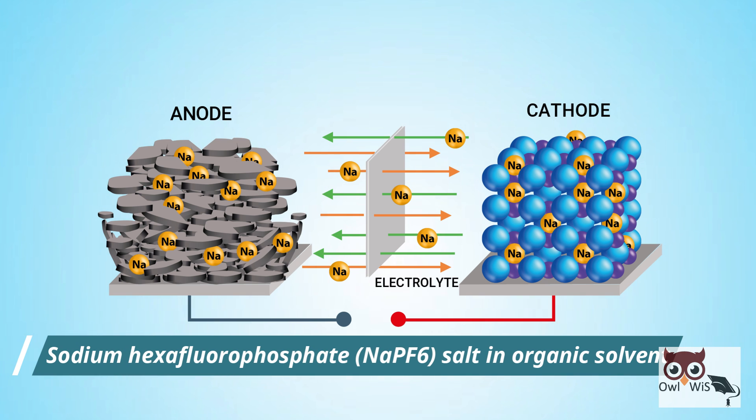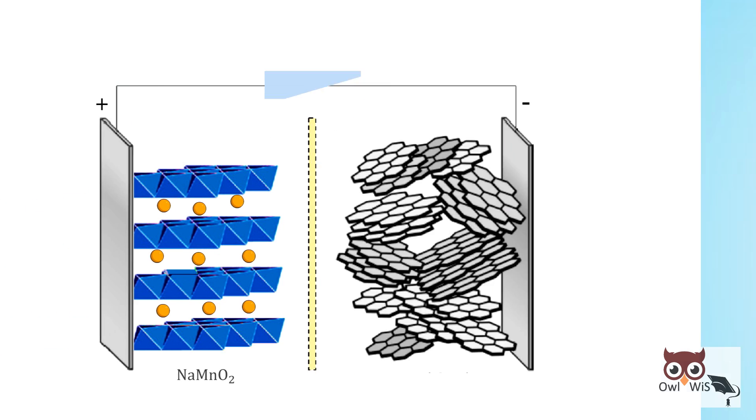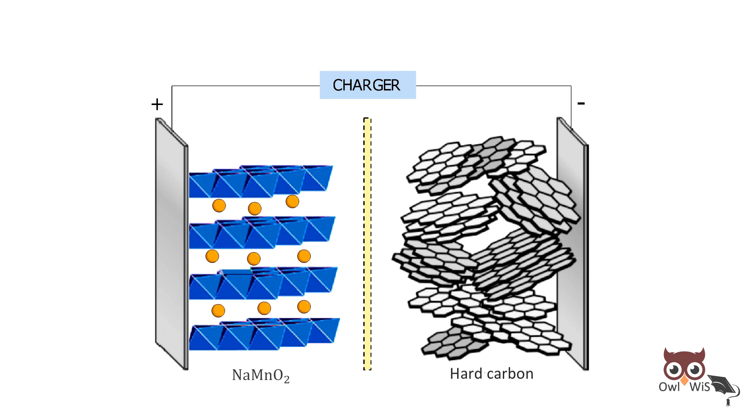Let us see the working. During charging, sodium ions are extracted from the cathode, enter the electrolyte, pass through the separator, and intercalate into the hard carbon structure while electrons travel through the external circuit.